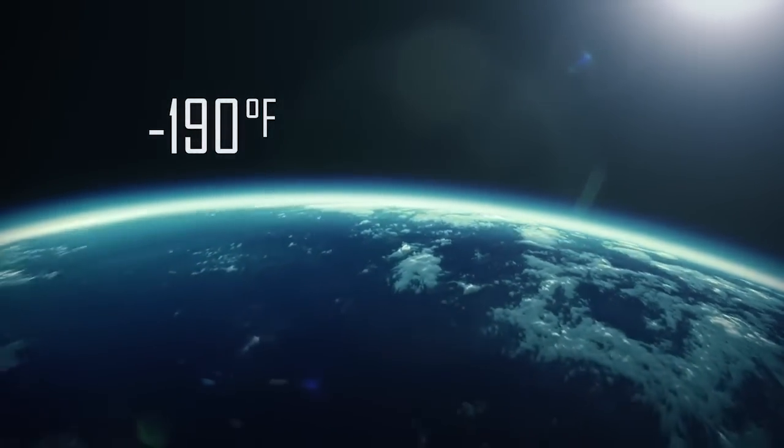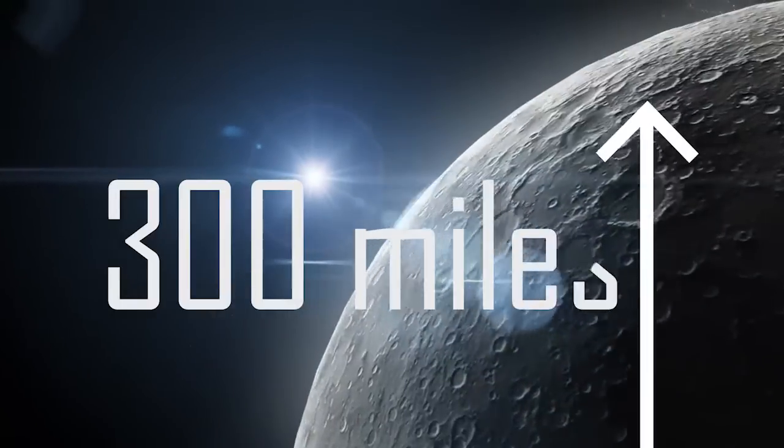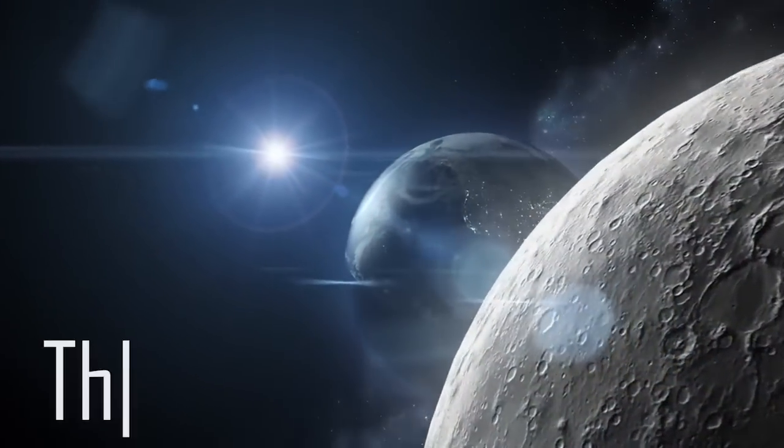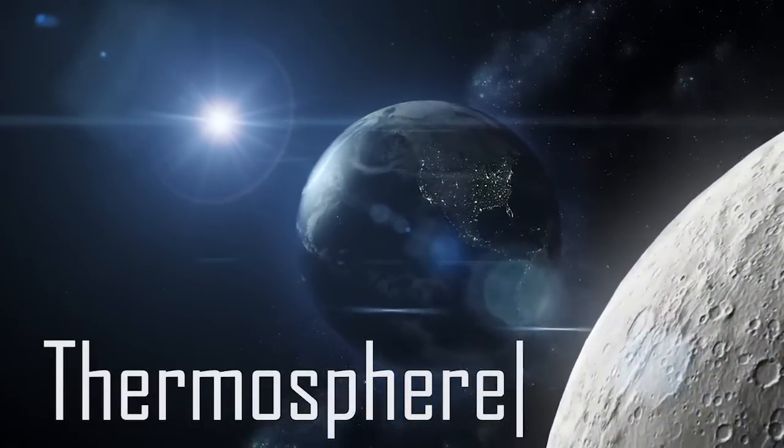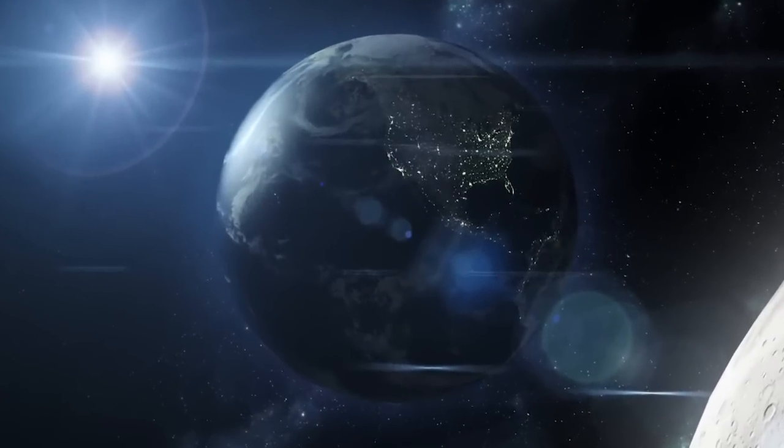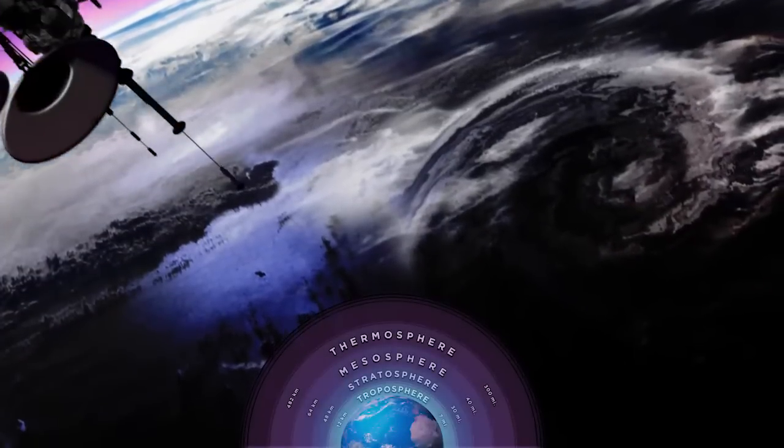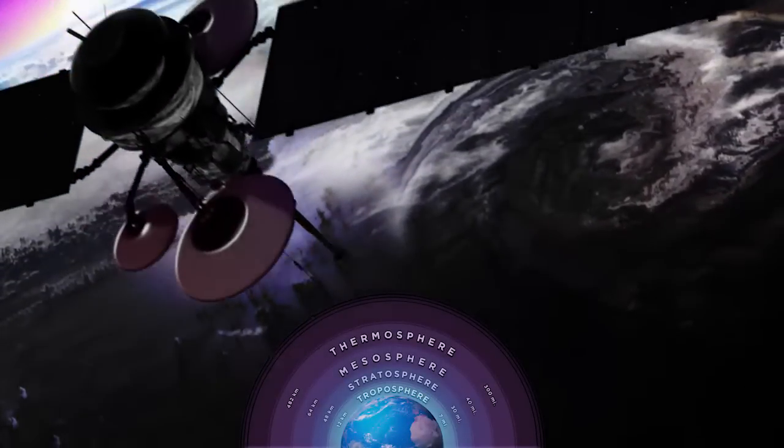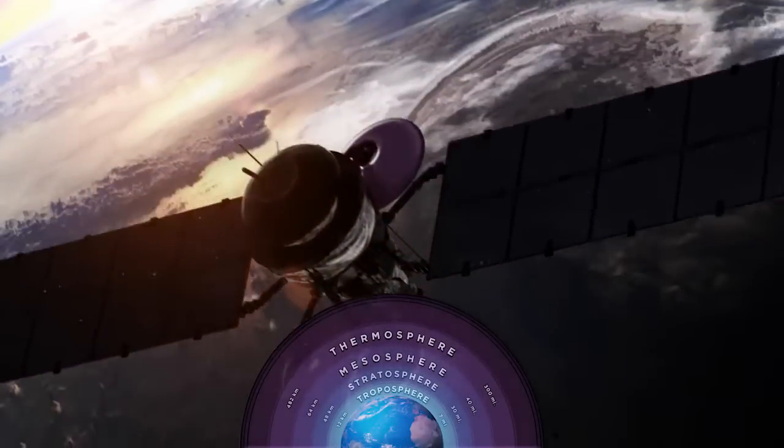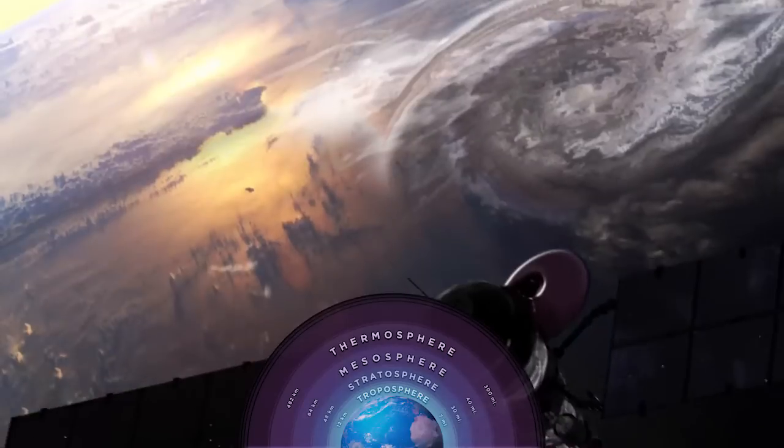300 miles up from Earth's surface is the thermosphere. This layer of the atmosphere is where space shuttles and satellites orbit the planet. The temperature of the thermosphere is incredibly hot because of energy coming directly from the sun.